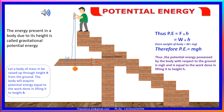Let a body of mass m be raised up through height h from the ground. The body will require potential energy equal to the work done in lifting it to the height h. Thus, PE = F × h. Here F = W (weight), therefore PE = W × h. And since W = mg, therefore PE = mgh. Thus, the potential energy possessed by the body with respect to the ground is mgh, and is equal to the work done in lifting it to the height h.